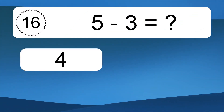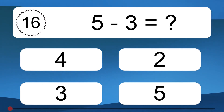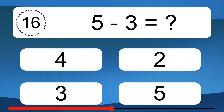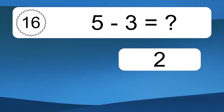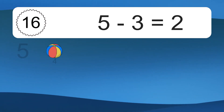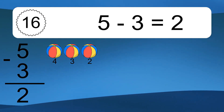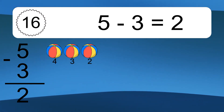5 minus 3 equals what? 5 minus 3 equals 2. Let's count it: 4, 3, 2.